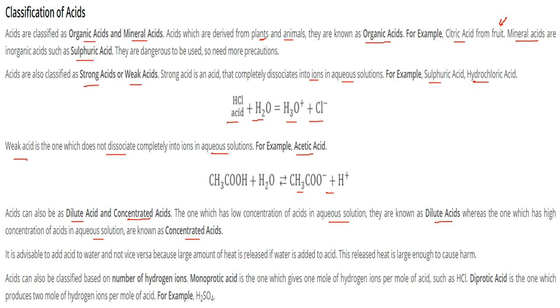Generally, strong acids when they are mixed with water, we have to be very cautious because they release a lot of heat and this is generally harmful. Acids can also be classified on the number of hydrogen ions like monoprotic acids and diprotic acids.